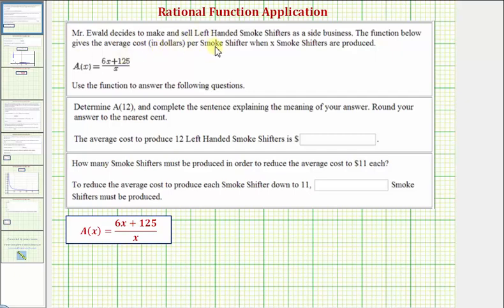Mr. Ewald decides to make and sell left-handed smoke shifters as a side business. The function below gives the average cost in dollars per smoke shifter when x smoke shifters are produced. We're given the average cost function and we're asked to answer several questions.